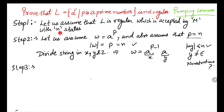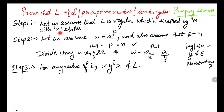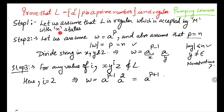Step 3: we choose a value of i such that x·y^i·z does not belong to L. We take i = 2, so w becomes a^(p-1) · a^2, which equals a^(p+1).